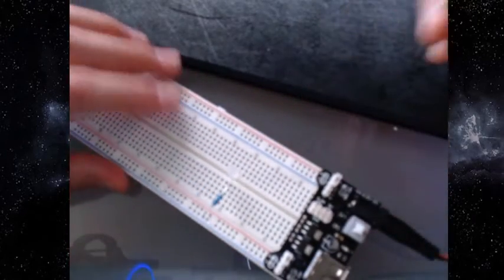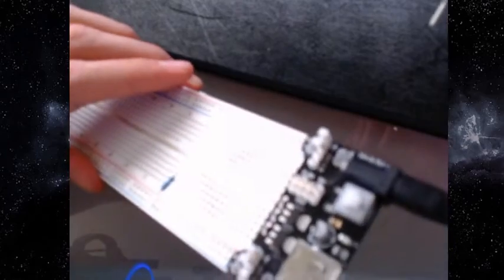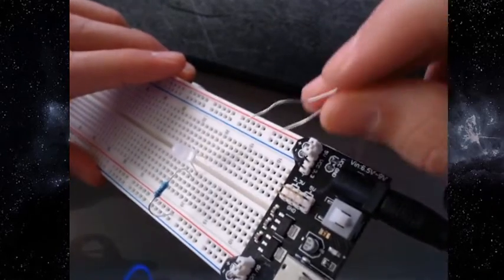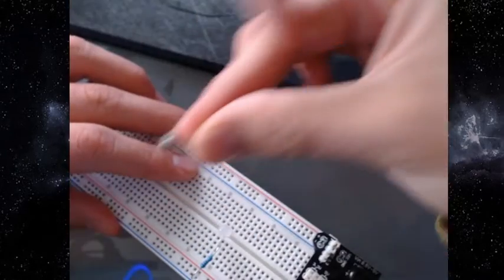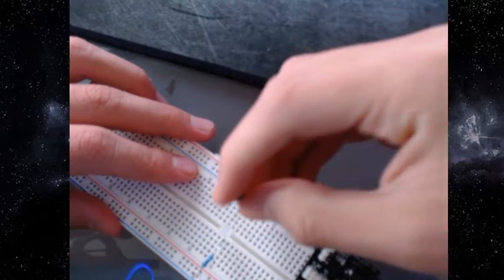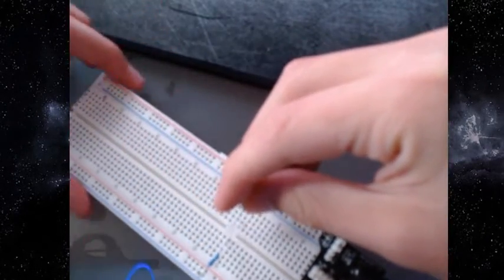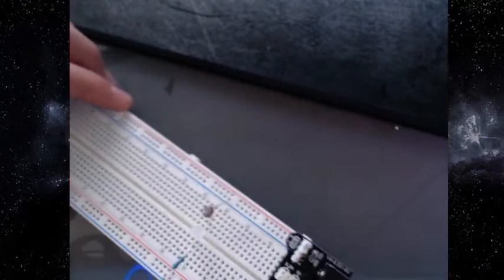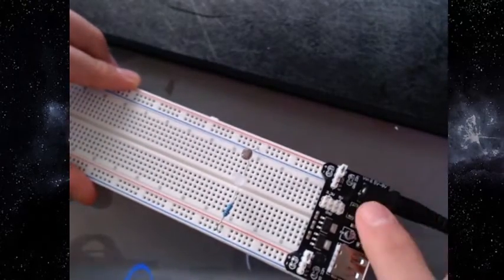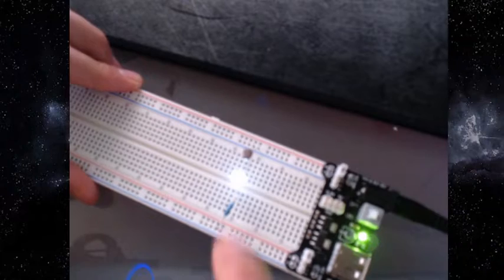Just like that. And then it will be the photoresistor, and it will be from the LED light to the negative. Then we can turn it on and it will be on.